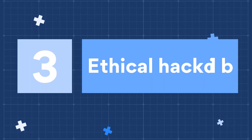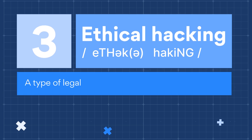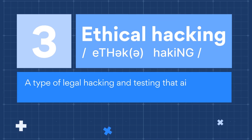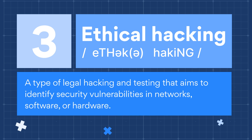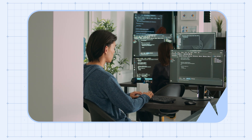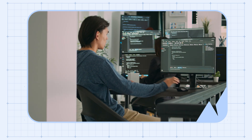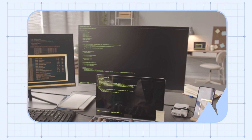Number 3: Ethical Hacking. Ethical hacking, also known as white hat hacking or penetration testing, is a type of legal hacking and testing that aims to identify security vulnerabilities in networks, software, or hardware. It's performed by cybersecurity experts, who always have the permission of the target to hack into systems and report vulnerabilities.